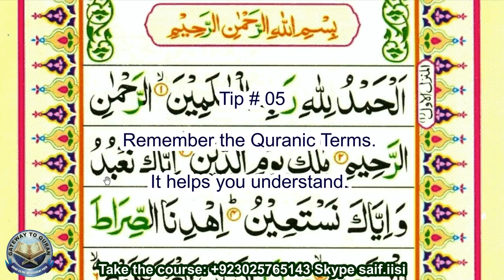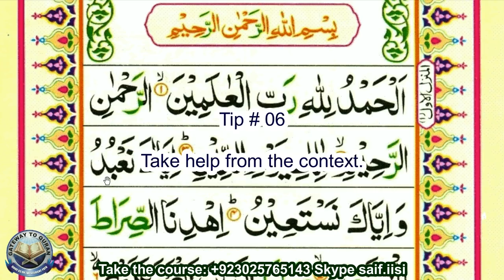Tip number five: the holy Quran has its own vocabulary — Quranic and Islamic terminology — which is sometimes different from the literal meaning of words. Tip number six: context. Sometimes the context will change the meaning. For example, the word 'ishtara' has been used in two different meanings in the Quran — both 'buying' and 'selling', which are totally opposite meanings. To decide which meaning applies in a specific passage, the context will help you.